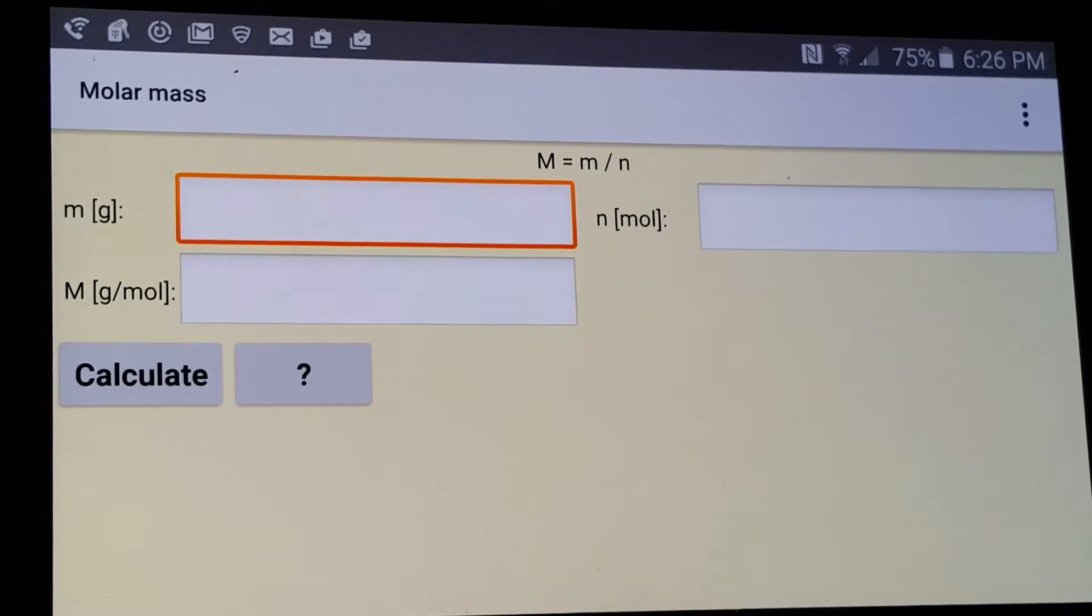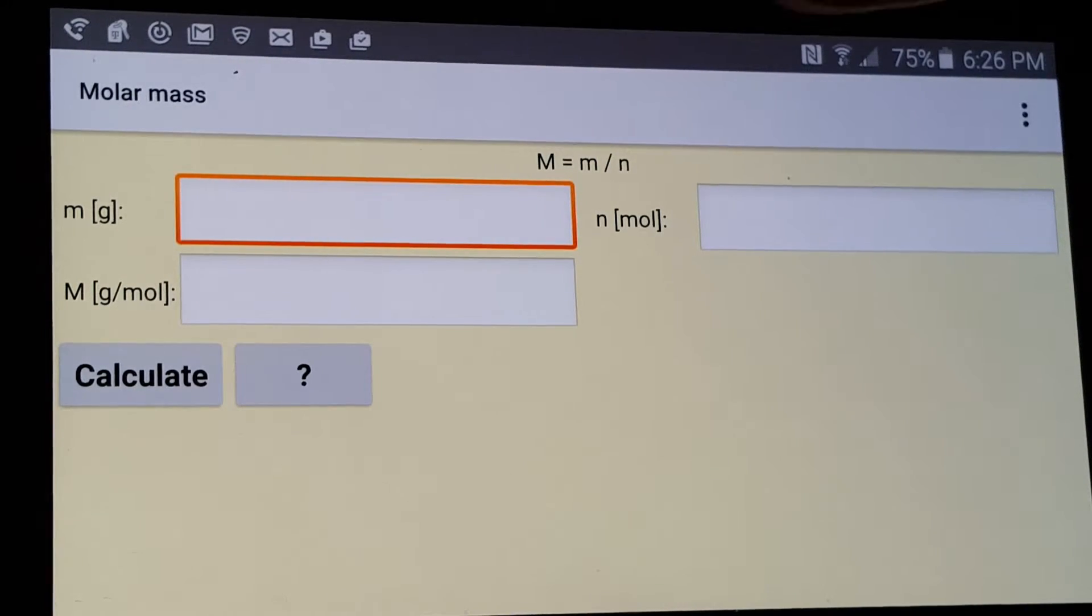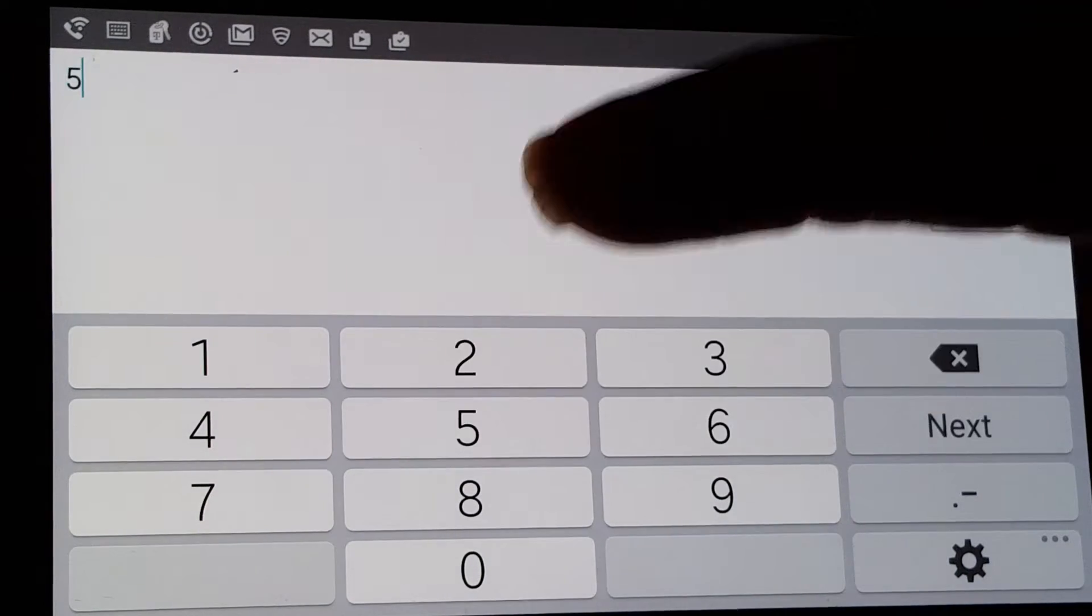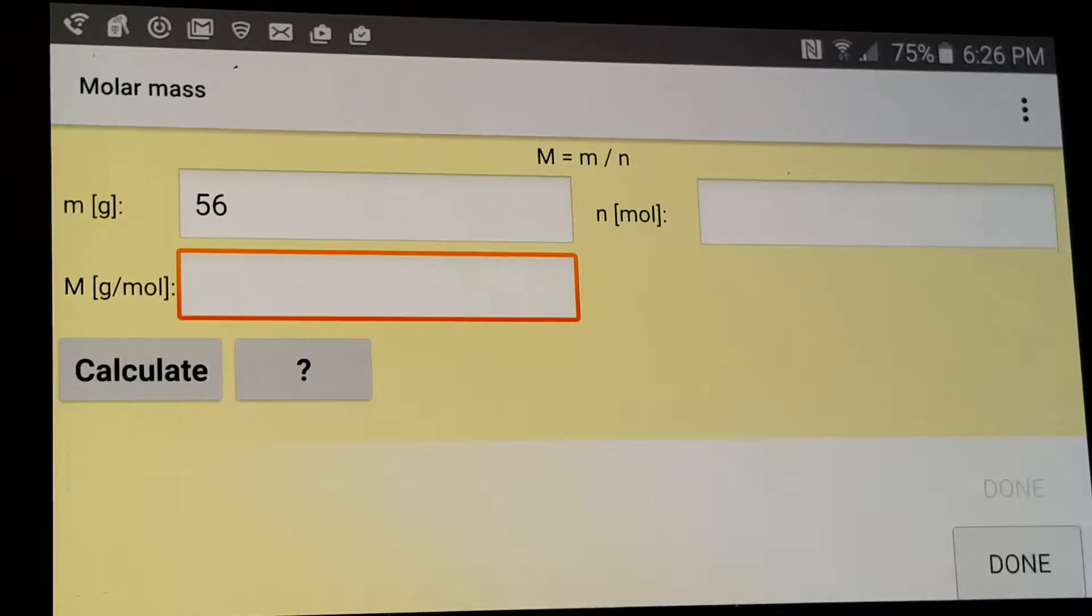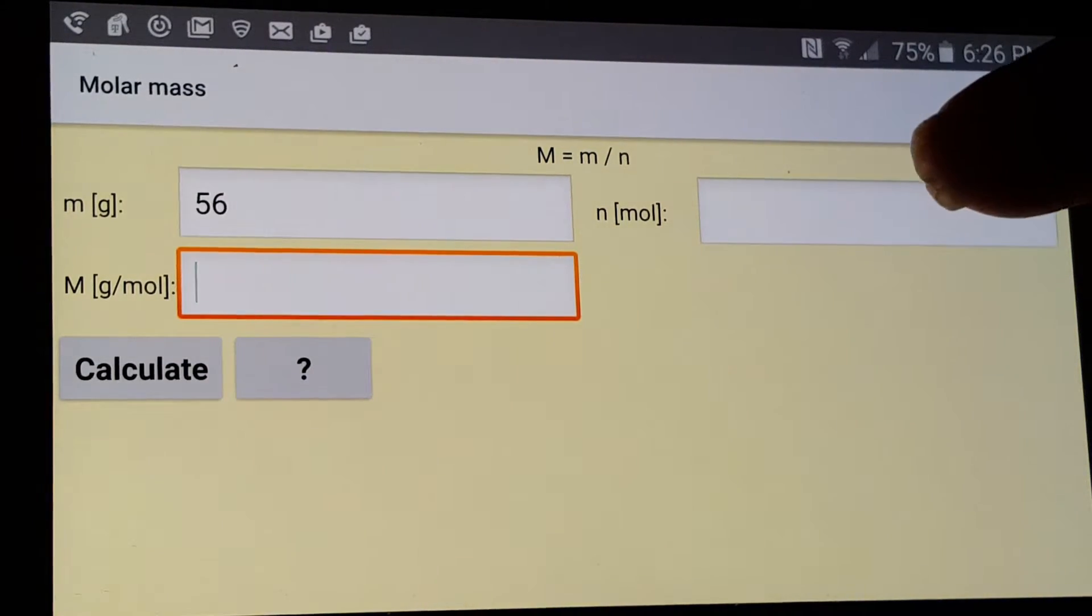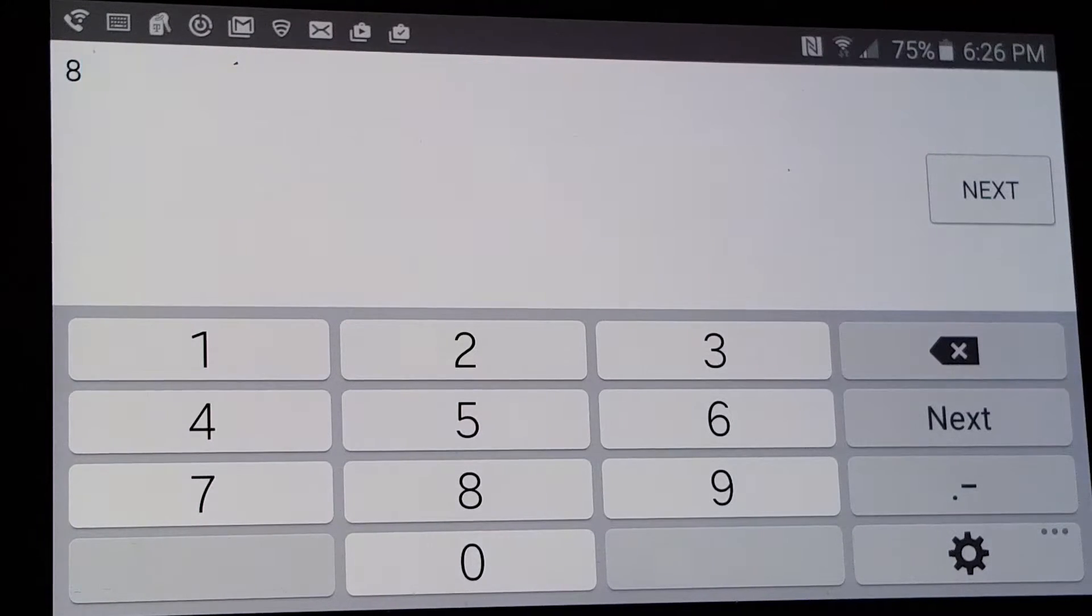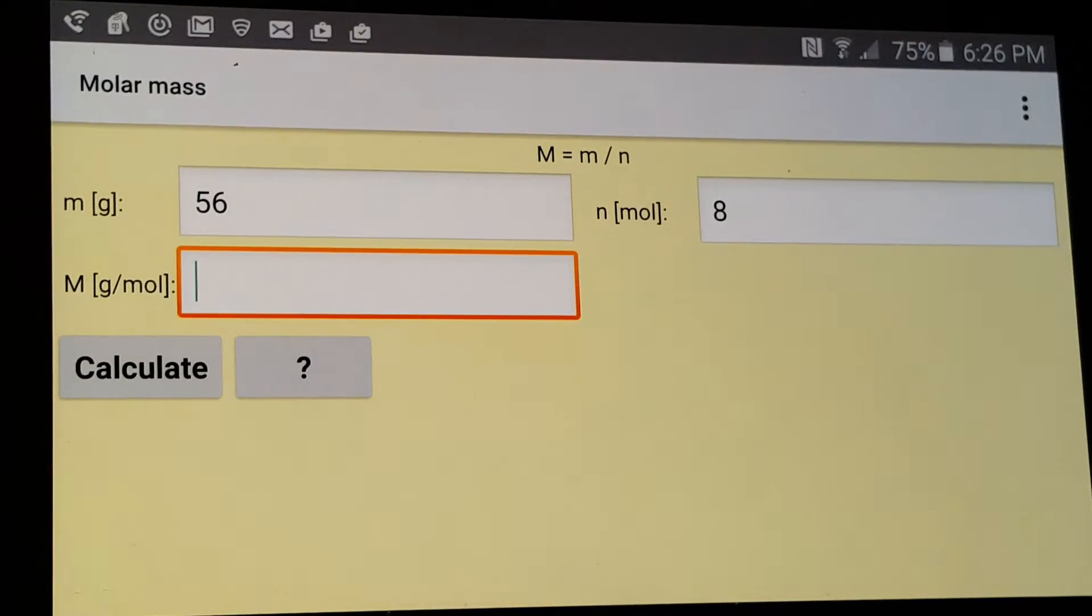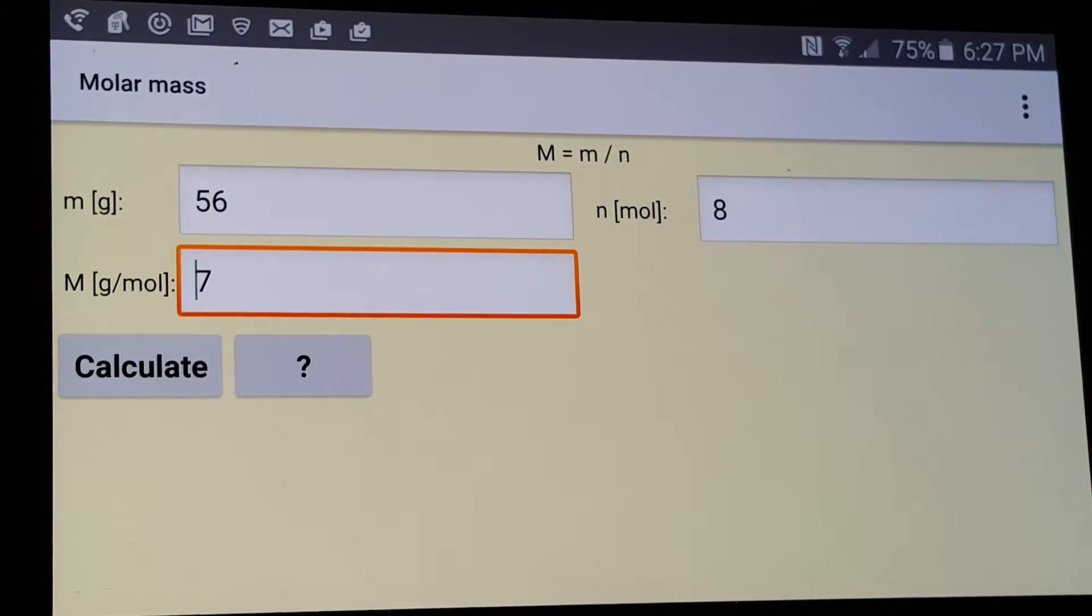Now let's try if we can solve this. Let's plug in the mass in grams. Let's make it 56. And for the number of moles, we'll put in 8. Then we'll press the Calculate button. And 7 is our molar mass.